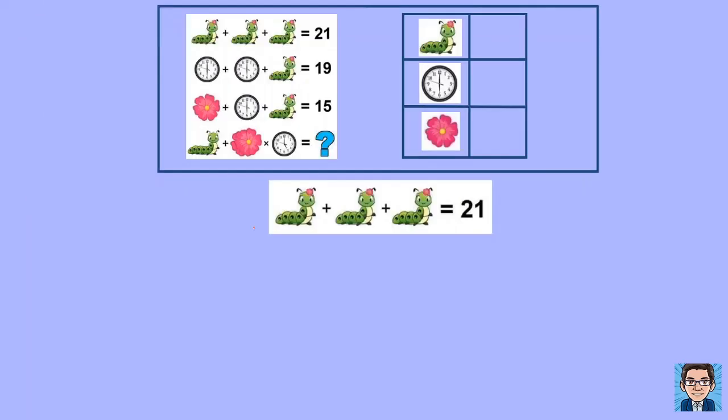Okay, let's start with the first equation. We've got three caterpillars. Take a quick look and make sure the caterpillars are all the same. And if we do, they look pretty similar. So we can say that three identical caterpillars equals 21. Divide both sides by 3, and we get one caterpillar is equal to 7.